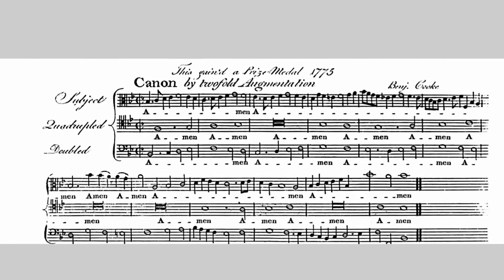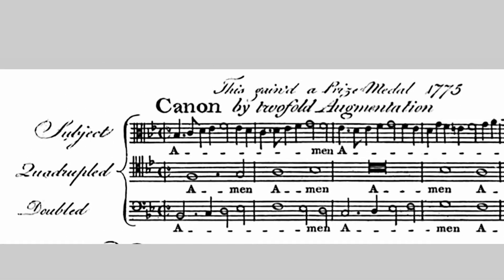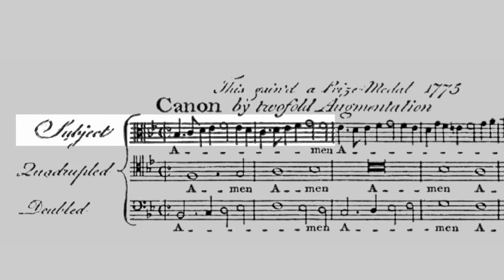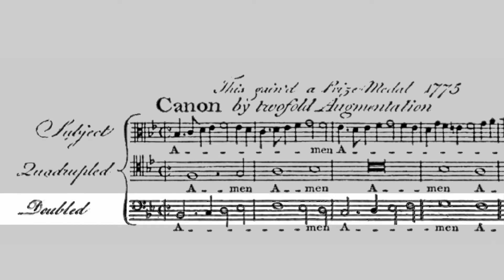Benjamin Cooke's most famous canon consists of one melody played at different speeds and in different ranges. The subject appears in the highest voice. The same melody is heard in the lowest or bass voice, but with the note values doubled, making it twice as slow. See if you recognize it.